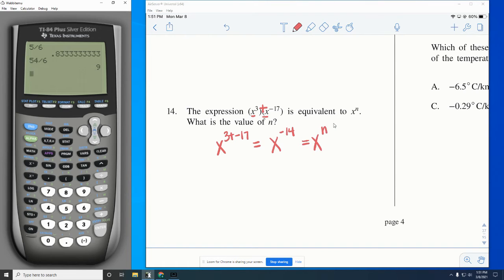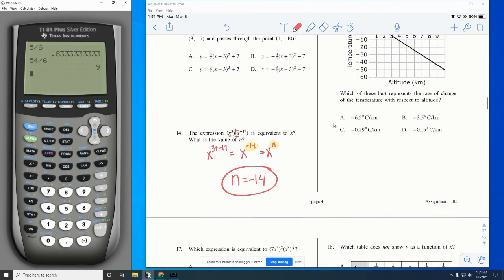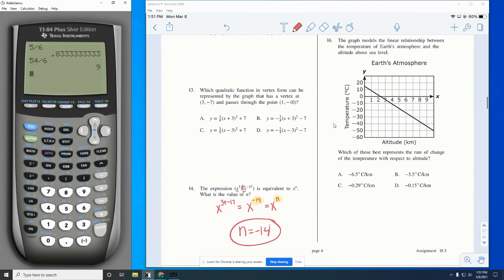Now, remember, this is equal to x to the n. So what they're looking for here is the n value. So n would equal negative 14. And that's what you would put on your answer document or for the Schoology quizzes. You would type those into Schoology as negative 14. n equals negative 14.